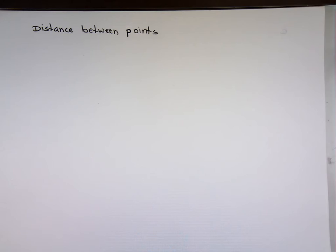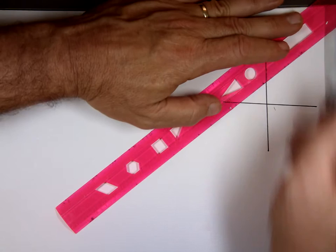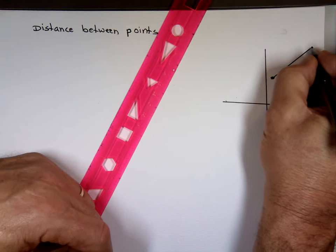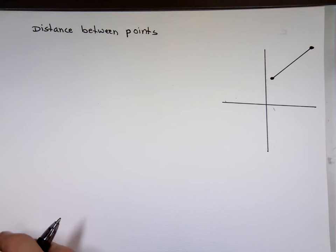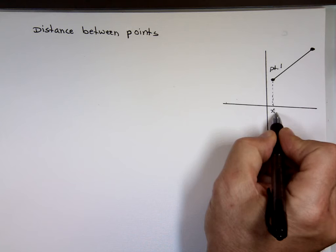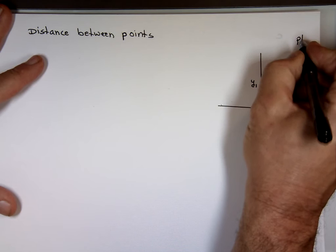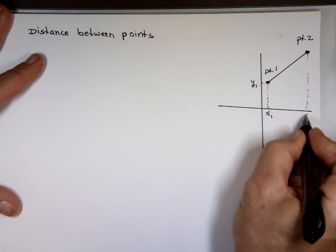So let's say we have two points. Let me draw a line here — an X-axis and Y-axis. And let's say we have these points here; I want to find the distance between them. If I call the first point PT1, that's point 1 — this is the X-value for point 1 and this is the Y-value for point 1. If I call this point 2, this is the X-value for point 2 and this is the Y-value for point 2.